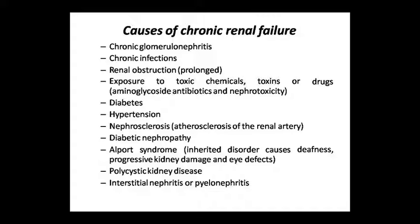Causes of chronic renal failure include chronic glomerulonephritis, chronic renal infection and obstruction, exposure to nephrotoxic chemicals, toxins, and drugs, diabetes, hypertension, nephrosclerosis (which is atherosclerosis of the renal artery), diabetic nephropathy, Alport syndrome (a genetic disease involving deafness, progressive kidney damage, and eye defects), polycystic kidney disease (where multiple cysts form in the kidney), interstitial nephritis, and pyelonephritis.